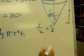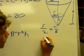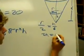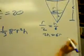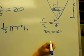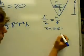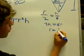Cross-multiply, we will get 2h equal to 6r, and divide each side by 6. 2h over 6 is equal to r, which in other words, r is equal to one-third h.